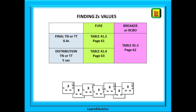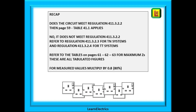This decision table should help you visualise the process. Decide if it is a final or distribution circuit on the left and choose a row. If it is a fuse, make your selection in the green column and find the ZS in the appropriate table shown. If it is a circuit breaker or RCBO, use table 41.3 to find the ZS.